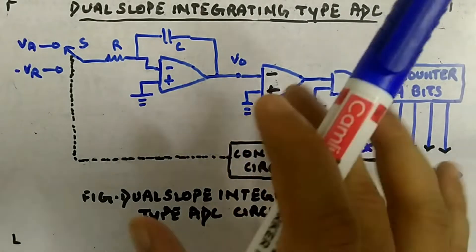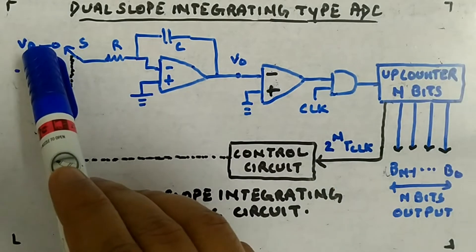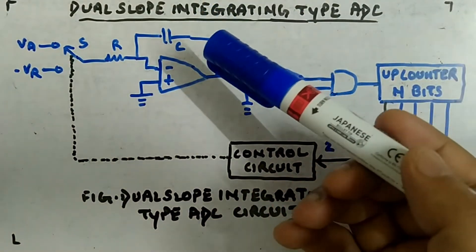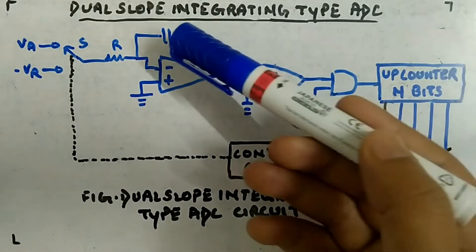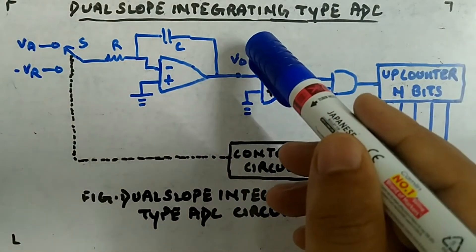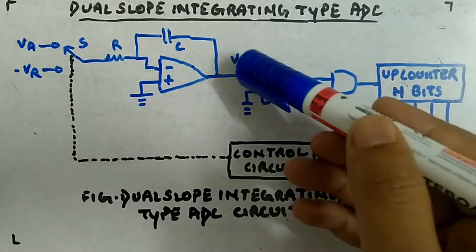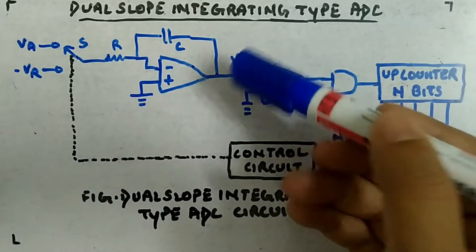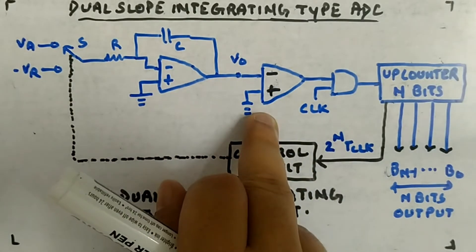Initially your capacitor will be uncharged. You connect it to va input voltage and it will start charging — linear charging. The output is minus va divided by rc times t. We are not interested in the capacitor output directly, so va output is minus va divided by rc times t. This is a negative voltage, and the comparator's positive terminal is at zero, so since the positive terminal has greater voltage, the output will be high.